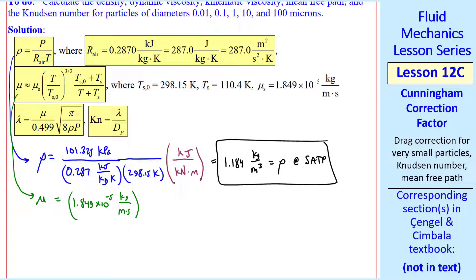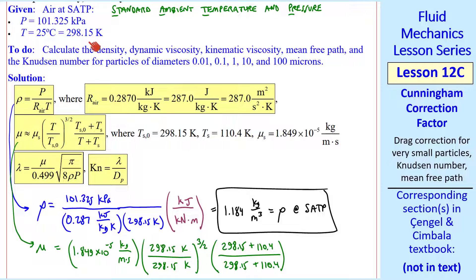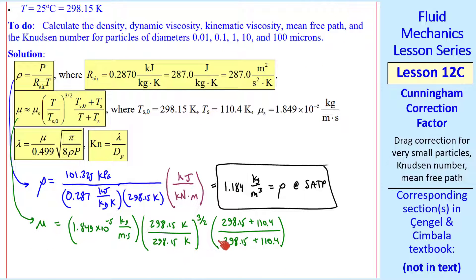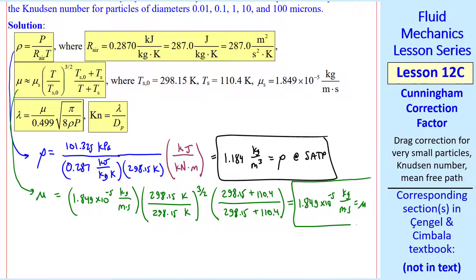For mu, we use the Sutherland equation, mu s, times the ratio of temperatures to the 3 half power. And then this grouping of terms, you can see that the reference temperature is the same as SATP, and thus these two terms are 1, and thus mu is 1.849 times 10 to the minus 5 kg per meter second.